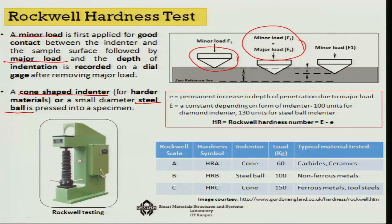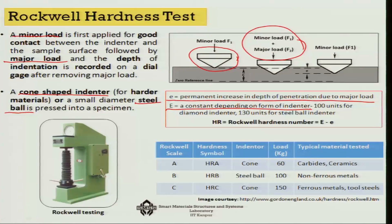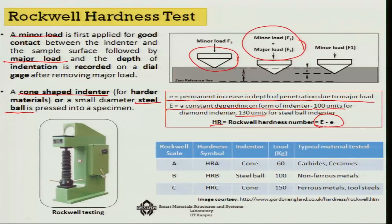Once you know the permanent increase in depth of penetration due to the major load, there is a constant E which depends on the form of the indenter — about 100 for a diamond indenter and about 130 for a steel ball indenter. The Rockwell hardness number HR is obtained by subtracting the small e from capital E.